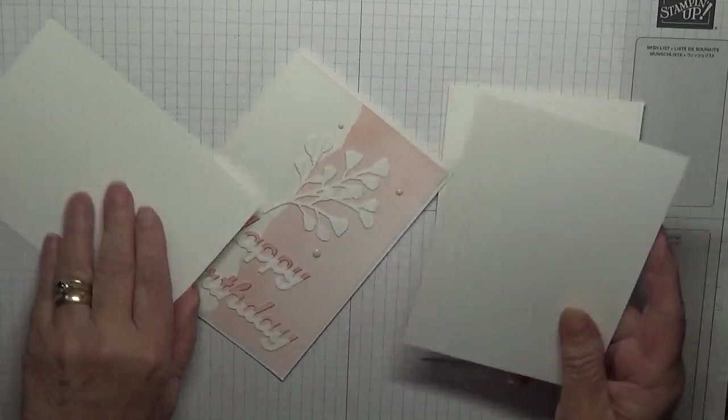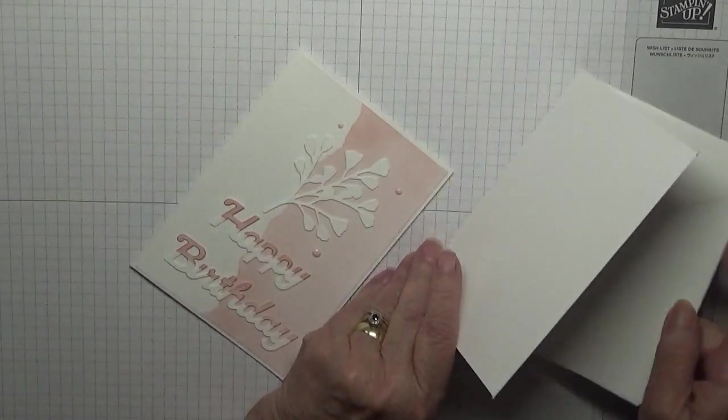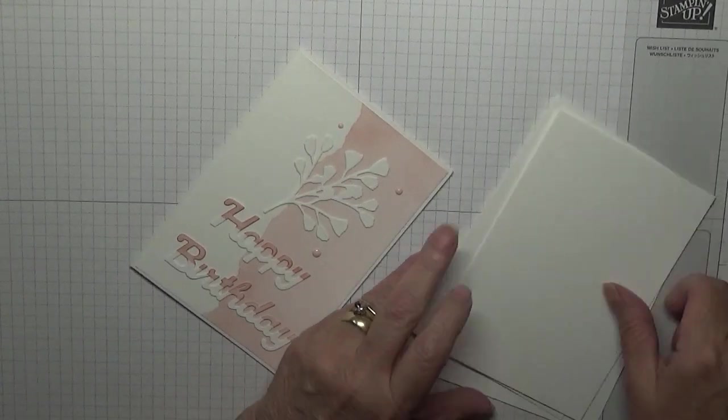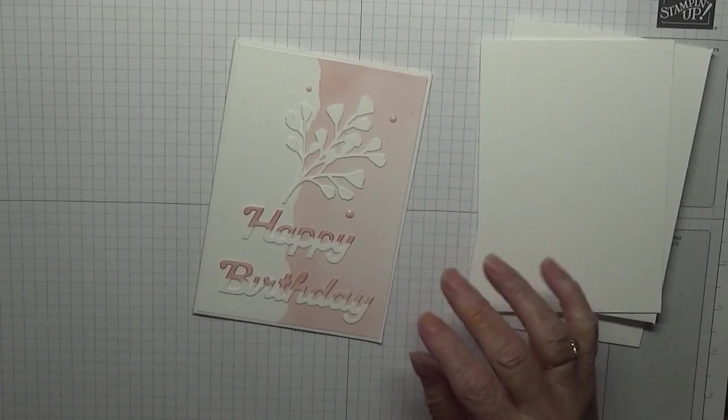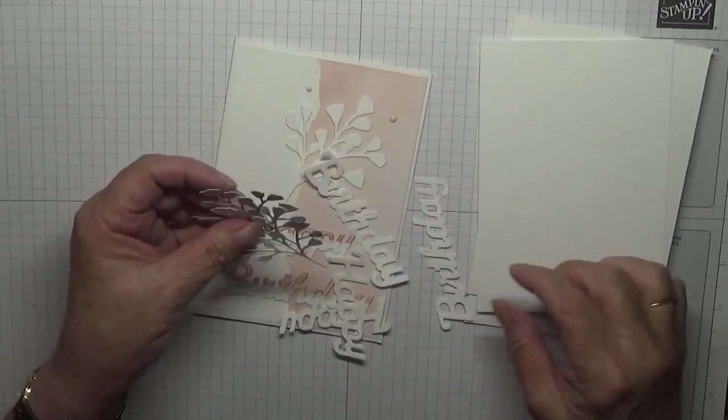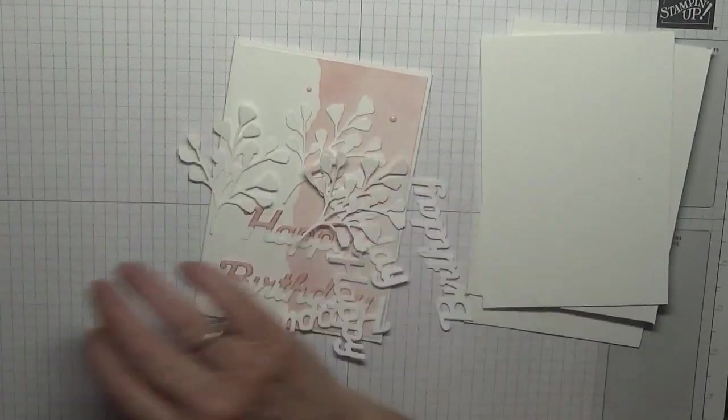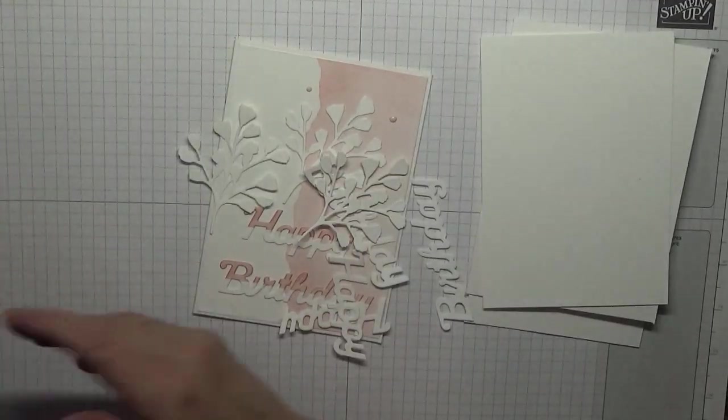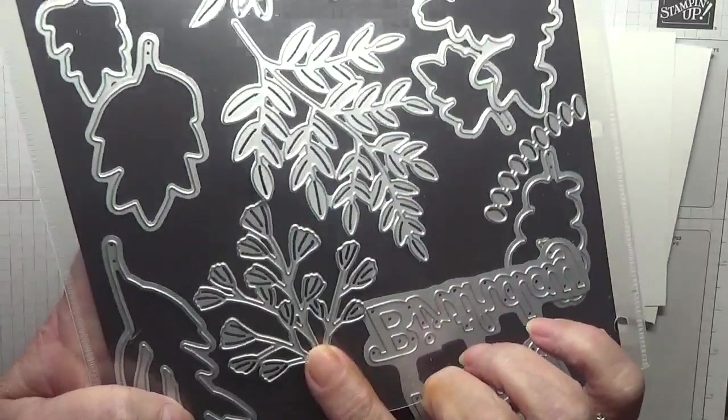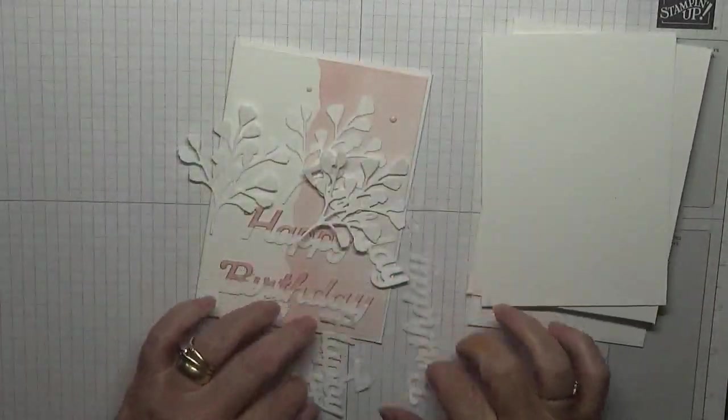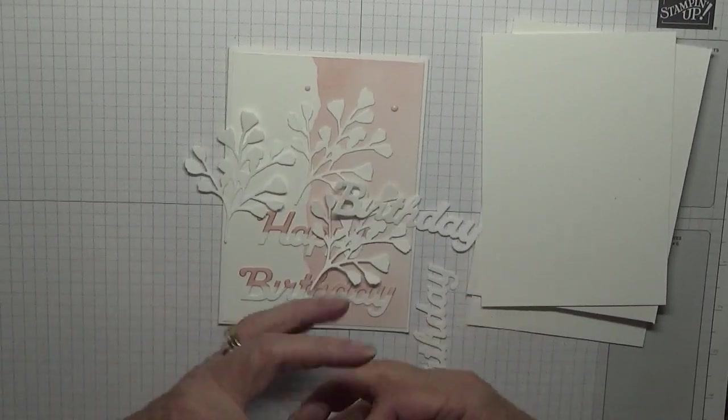Two pieces of basic white at five and five-eighths by three and seven-eighths, one for the inside and one for the outside. Now I've already cut up the bits. I've got two of these leaves and these are from Forever Fern.